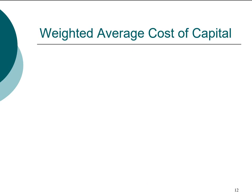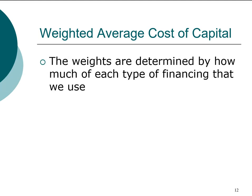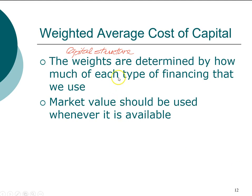Now we know how to compute the cost for each individual component — stocks, bonds, preferred stock — we're going to put them all together into a single number called Weighted Average Cost of Capital. That single number will capture the required return demanded by stockholders, bondholders, and preferred stockholders. To compute this composite number, we need to compute the weights, which are determined by how much of each type of financing a company uses. These weights are called capital structure weights, which refer to the percentage of the firm financed by debt, stocks, or preferred stock.